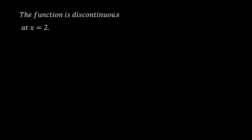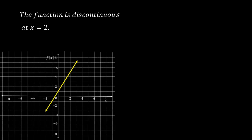The function is discontinuous at x equals 2. This is the graph of the function. There is a hole at x equals 2, or at point (2, 5). To remove the discontinuity, redefine the function.